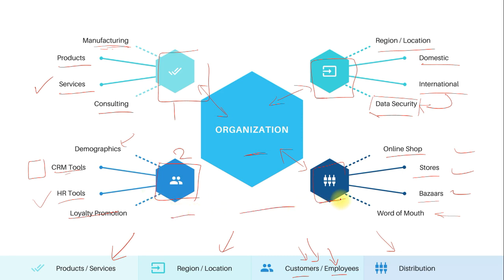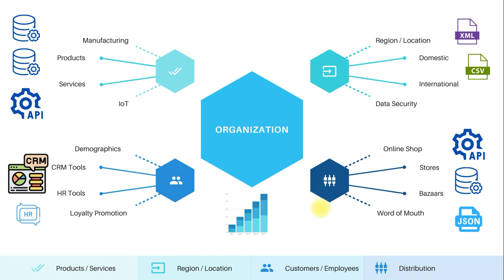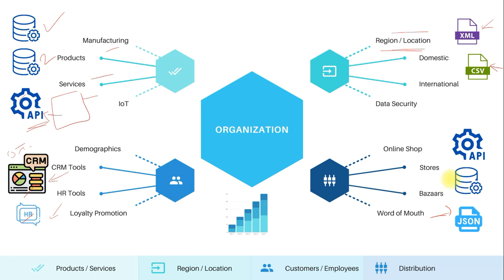When you work across different entities, organizations always face challenges with how data is handled and managed. For manufacturing and products you need a database — it could be one database or multiple, or you may have a web application pulling data from APIs. You may have CRM tools on Oracle or other platforms, and HR tools as well. Data comes from various places and applications. Different regions may send data as XML, CSV, JSON, or through direct database access.